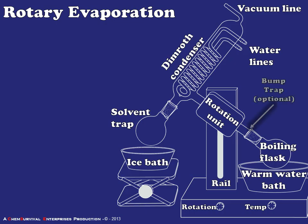In other schematics you may see something called a bump trap, located between the boiling flask and the stem of the rotation unit. If your sample flash boils and goes up into the stem, it will become contaminated with residue left in that stem by previous users. The bump trap is a small bubble of glass designed to catch that liquid so it doesn't drain back into your flask and contaminate the material you're trying to isolate.